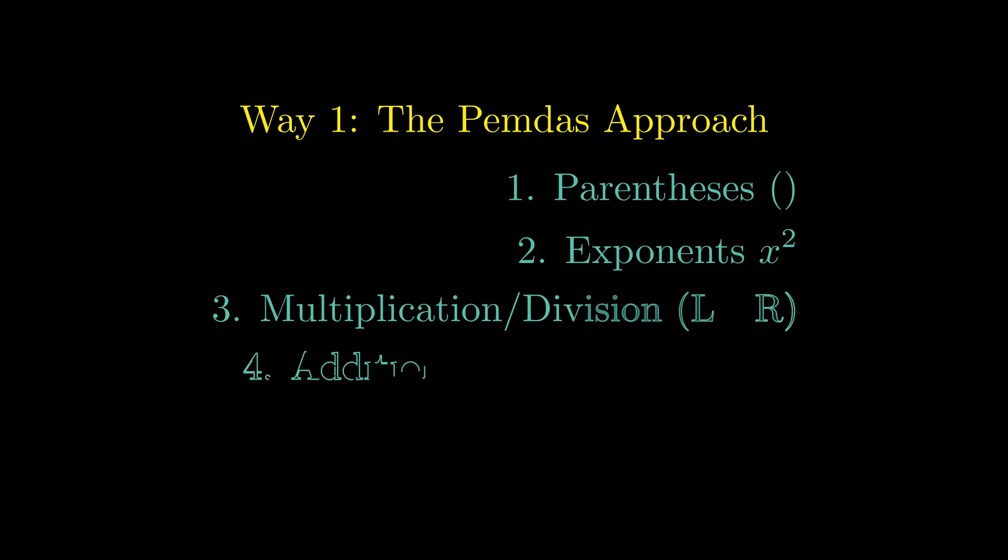First up, the PEMDAS approach. We have explicit rules for exactly this situation. Here's the key: multiplication and division are on the same level. When you have equal priority operations, you simply go left to right.